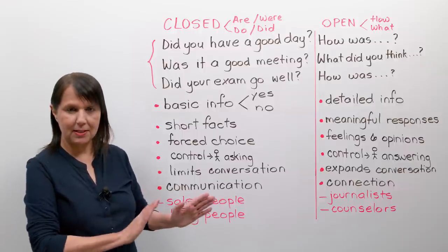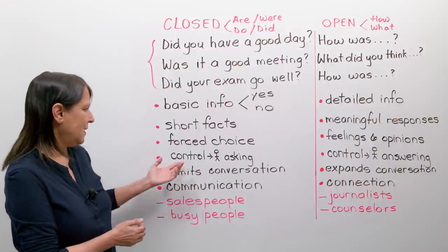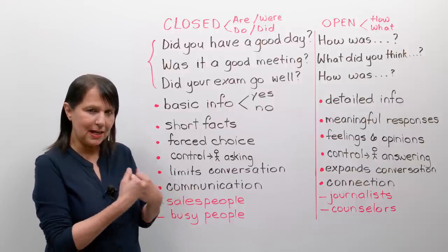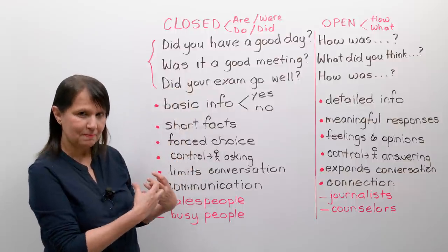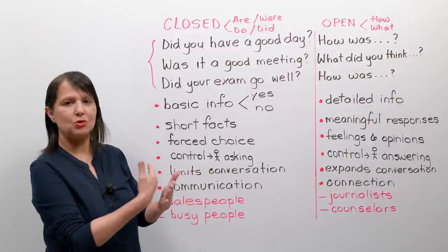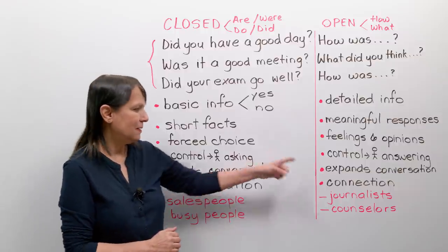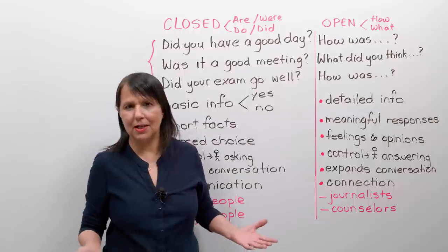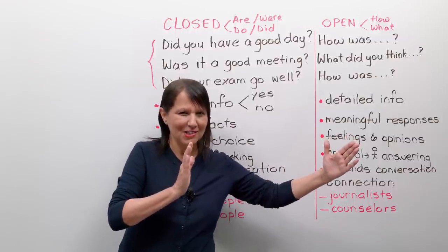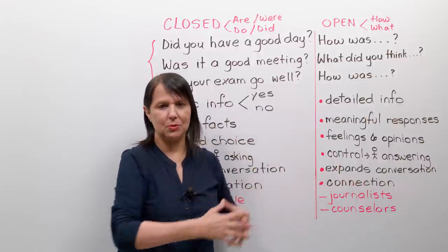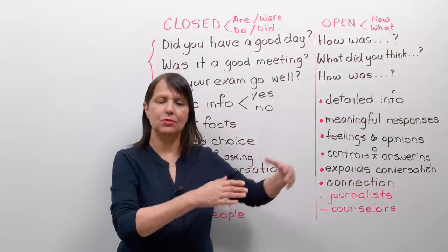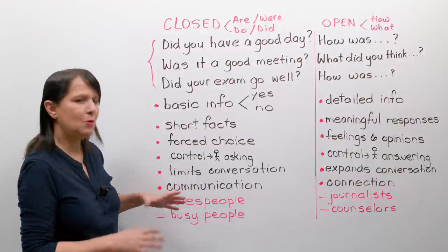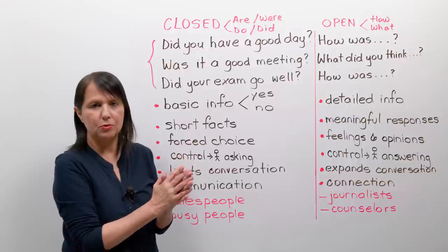Each type of question has its features, benefits, pros, and cons. With closed questions, the control is in the hands of the person asking — they frame the question. 'Did you have a good day?' — I'm telling you what you should have had and asking yes or no. With open questions, the control shifts to the person answering. If I just ask 'How was your day?' — I've said very little, and you'll likely say much more. The person can decide whether to give a short, medium, or long answer. Closed questions limit the conversation, and there may be times you want that.